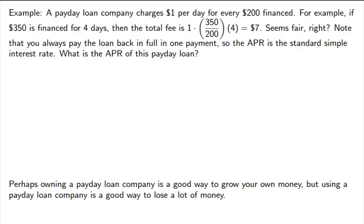Let's look at another example. A payday loan company charges $1 per day for every $200 that they finance. For example, if you take out $350 for a payday loan financed for four days, they charge $1 per day times the amount per $200 financed. So you take $350 divided by $200 to find dollars paid per day, then multiply by four days, giving a fee of $7.